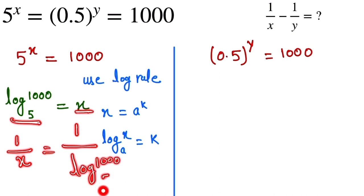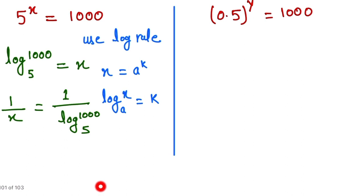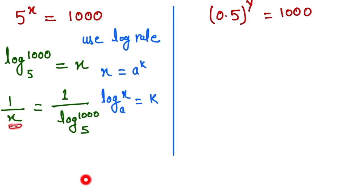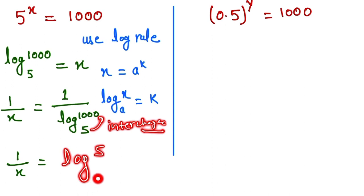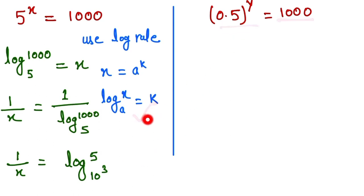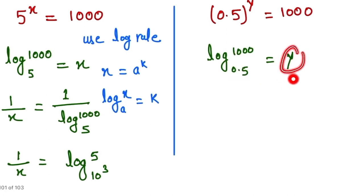So 1/x equals 1 divided by log base 5 of 1000. Now we interchange the base and power of the log, so 1/x equals log base 1000 of 5, where 1000 equals 10^3. Similarly, for the second equation, log base 0.5 of 1000 equals y.